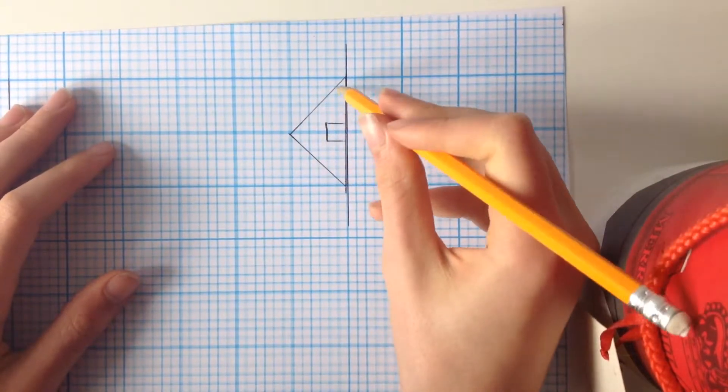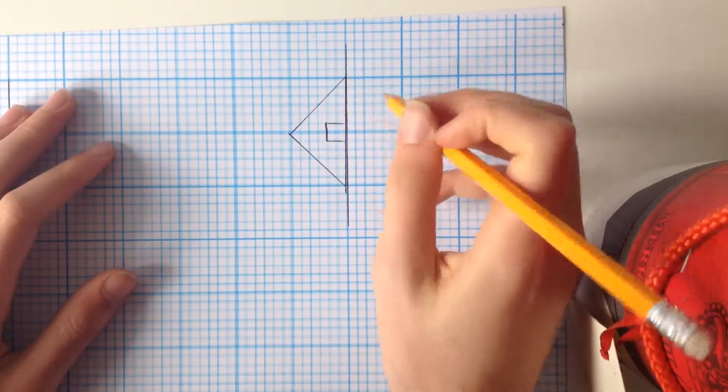So, let's say you've got this triangle here, you'd have to do the same triangle on this side.